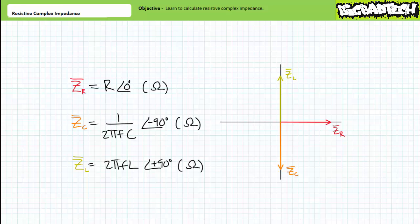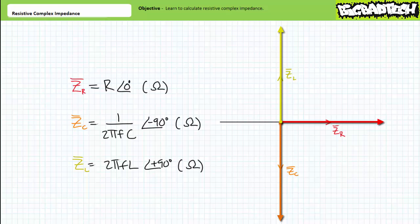You'll note the units of complex impedance — regardless of the resistive, capacitive, or inductive nature of the element — are always expressed in units of ohms. Only direction gives some clue as to the resistive, capacitive, or inductive characteristics. Purely resistive elements have a magnitude in ohms proportional to R at an angle of zero. Purely capacitive elements have a magnitude proportional to 1 over 2πfc at an angle of negative 90 degrees. Purely inductive elements have a magnitude proportional to 2πfL at an angle of positive 90 degrees. Additionally, note that capacitors and inductors are essentially mirror images of one another, with a 180-degree differential between them — a fact we'll use in industrial applications like power factor correction in later lectures.